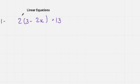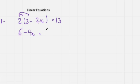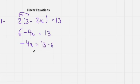First I need to multiply 2 into the bracket. 2 times 3 is 6, and 2 multiplied with minus 2x gives minus 4x, so we have 6 minus 4x equals 13. The 6 is positive, so on the other side it will be subtracted: minus 4x equals 13 minus 6.